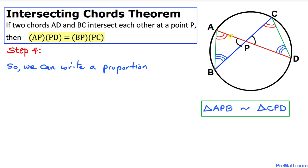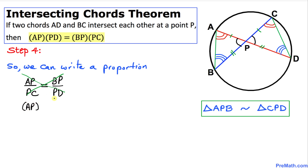Looking at the corresponding legs, the ratio AP divided by PC equals BP divided by PD. Let's cross-multiply to remove the fractions, giving us AP times PD equals BP times PC.